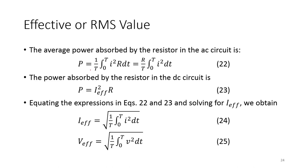Mathematically, the average power is as seen in previous slides. The power absorbed by a resistor in a DC circuit is I²R. To find the equivalent impact of the AC current and the effective current, we equate both expressions and solve for I_eff. Similarly, if operating in terms of voltage, we can get the effective voltage term.